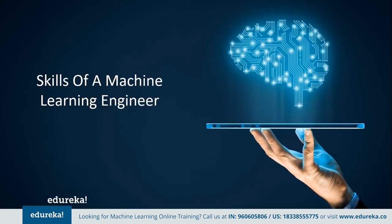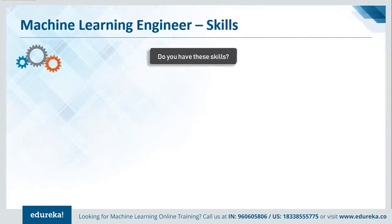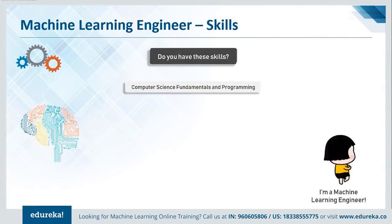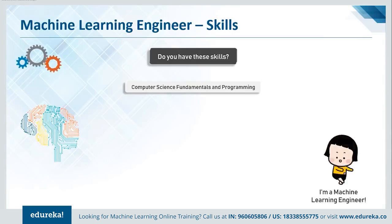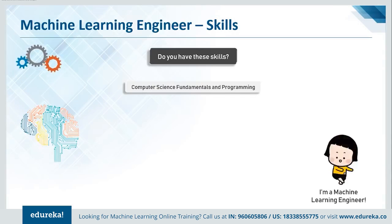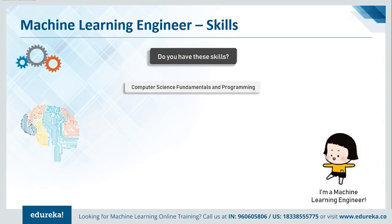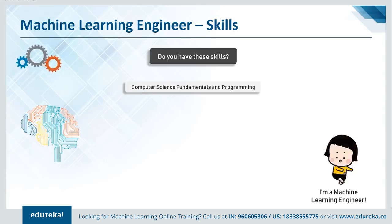Let's look at the skills needed to become a machine learning engineer. First, fundamentals and programming skills: you will require basic knowledge of data structures such as stacks, queues, multidimensional arrays, trees, and graphs, as well as basic algorithms like searching, sorting, optimization, and dynamic programming. You'll also need to know about memory concepts such as bandwidth, cache, and deadlocks.